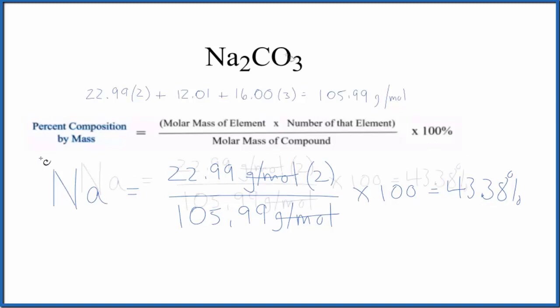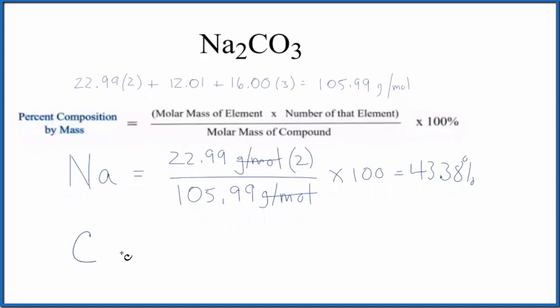Let's do the carbon. For carbon on the periodic table, 12.01 grams per mole. Since the units cancel out, I won't write them here. We only have one carbon atom and then we divide that by the molar mass of the compound, that 105.99. Multiply by a hundred and we get 11.33%.